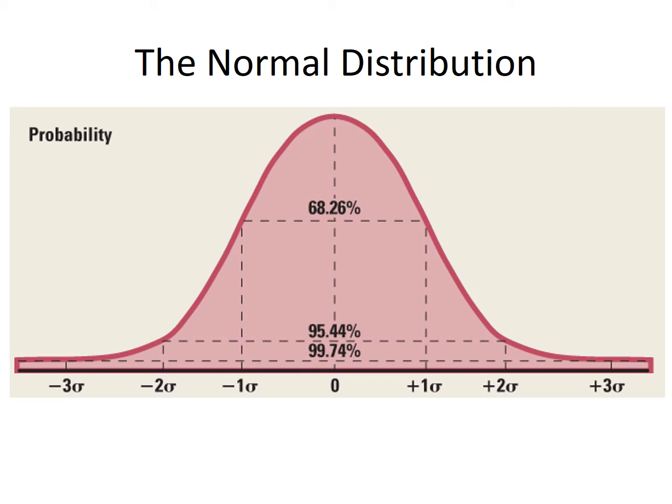So we could say things like, there's a 68.26% chance that your data point will fall between minus 1 and plus 1 standard deviation. There's a 95.44% chance it will fall between minus 2 and plus 2 standard deviations.